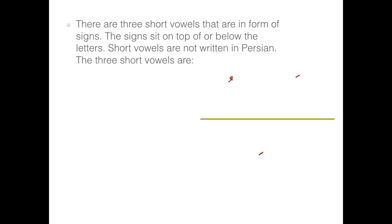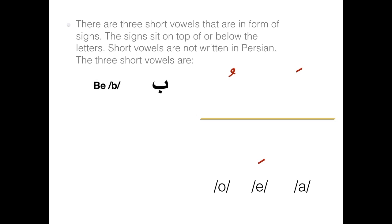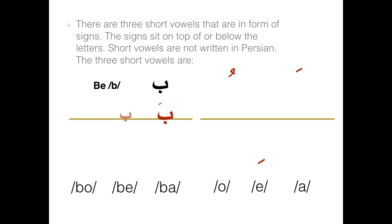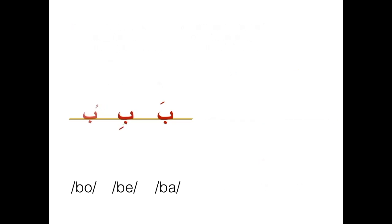The three short vowels are A, E, and O. Look at this example: Ba, Be, Bo.